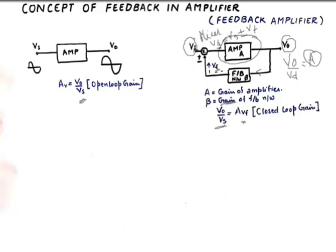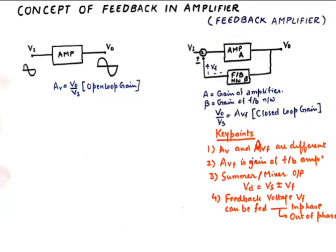Our objective is to find AVF. And of course we know that AV and AVF are going to be two different things. So our key points are AV and AVF are different. AVF is the gain of the feedback amplifier and the output of the summing or the mixer is going to be Vd.